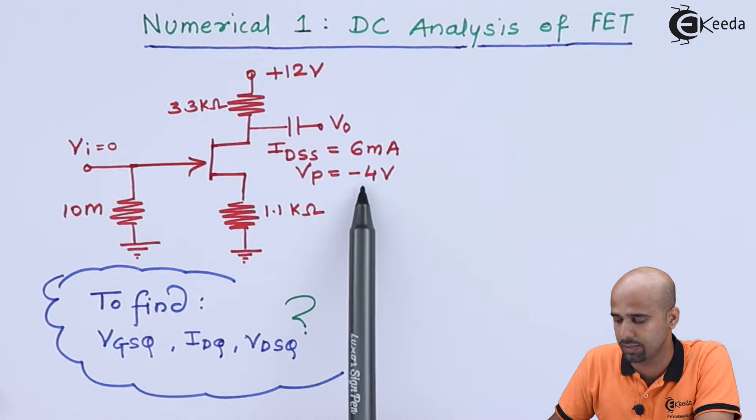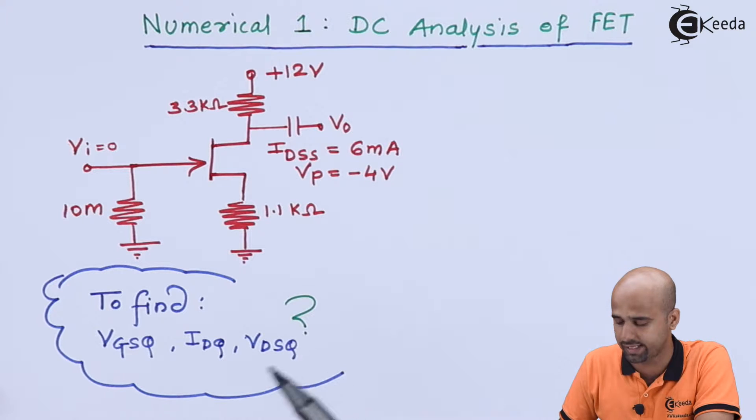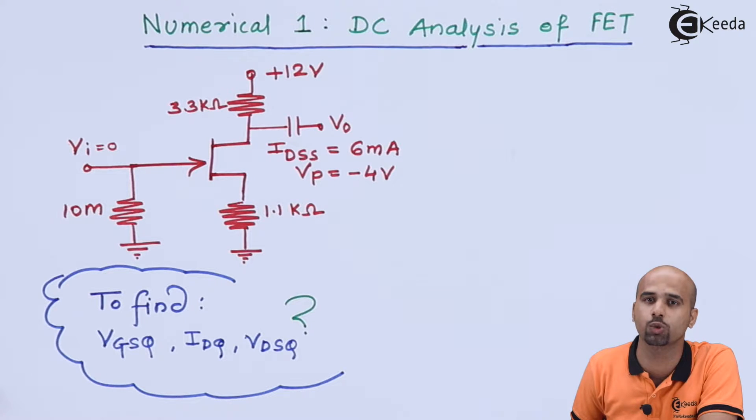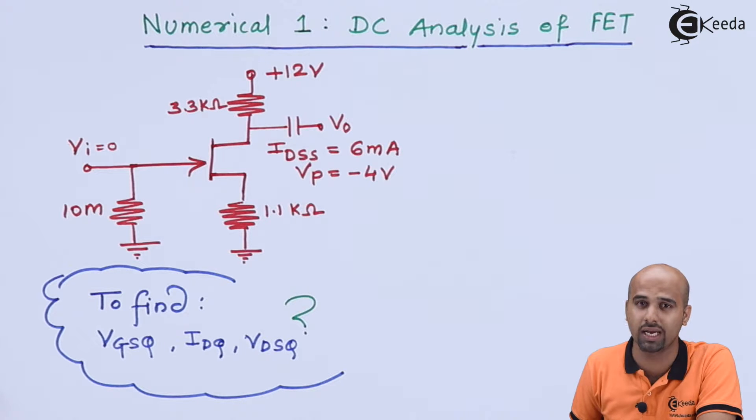VP pinch-off voltage is given minus 4 volts and they ask us to find out the Q parameters, that is VDSQ, VGSQ, and IDQ. Let's see how it works to find out the values of required parameters.